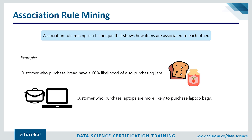Let's say you're given market basket data and have to analyze items bought together to see if there's an interesting relationship in buying behavior. You cannot assume association between two products just because they were bought together two or three times — you have to analyze hundreds of transactions to find a pattern. For example, people who buy bread have a 60% chance of also buying jam, and people who purchase laptops will buy laptop bags.